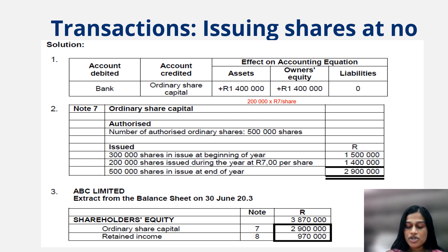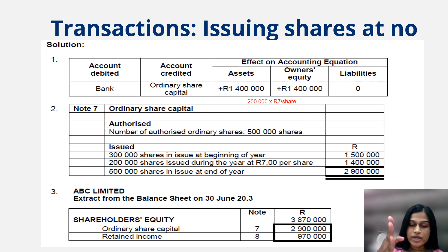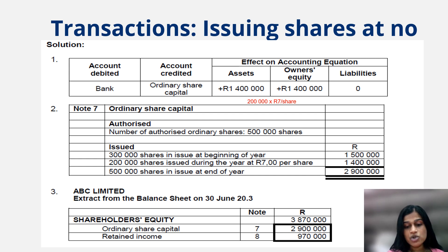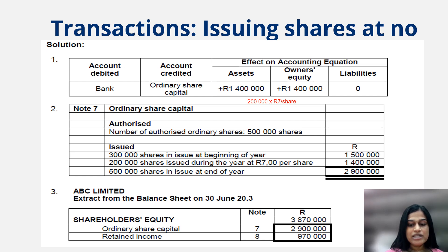In this scenario it was not specified that we should do the comparative year, but generally in financial statements you would show the current year and then the prior year — which would be 30th June 2002. Because it wasn't asked and wasn't specified, we only did the current year.